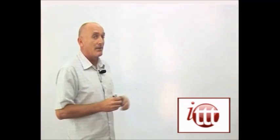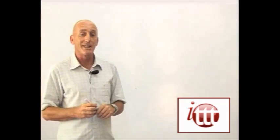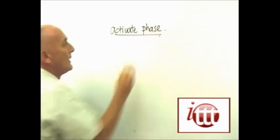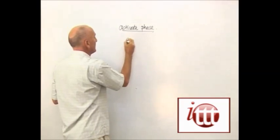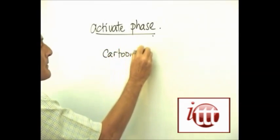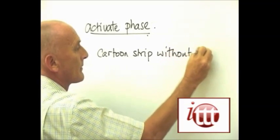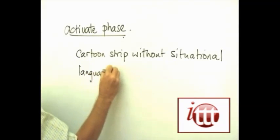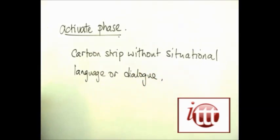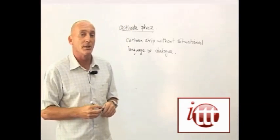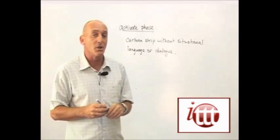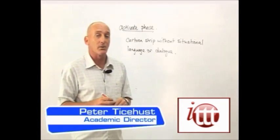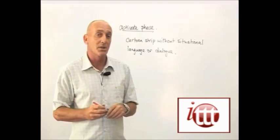For the final stage in the activate, what we're going to then do is to put those two ideas from the study phase together and we're going to give them a cartoon strip which has neither the situational description nor any dialogue in the speech bubbles, and the students are going to have to fill in both of those bits of information. Once they've done that, they can then read those back to us for their feedback, and we can correct any common mistakes between them.